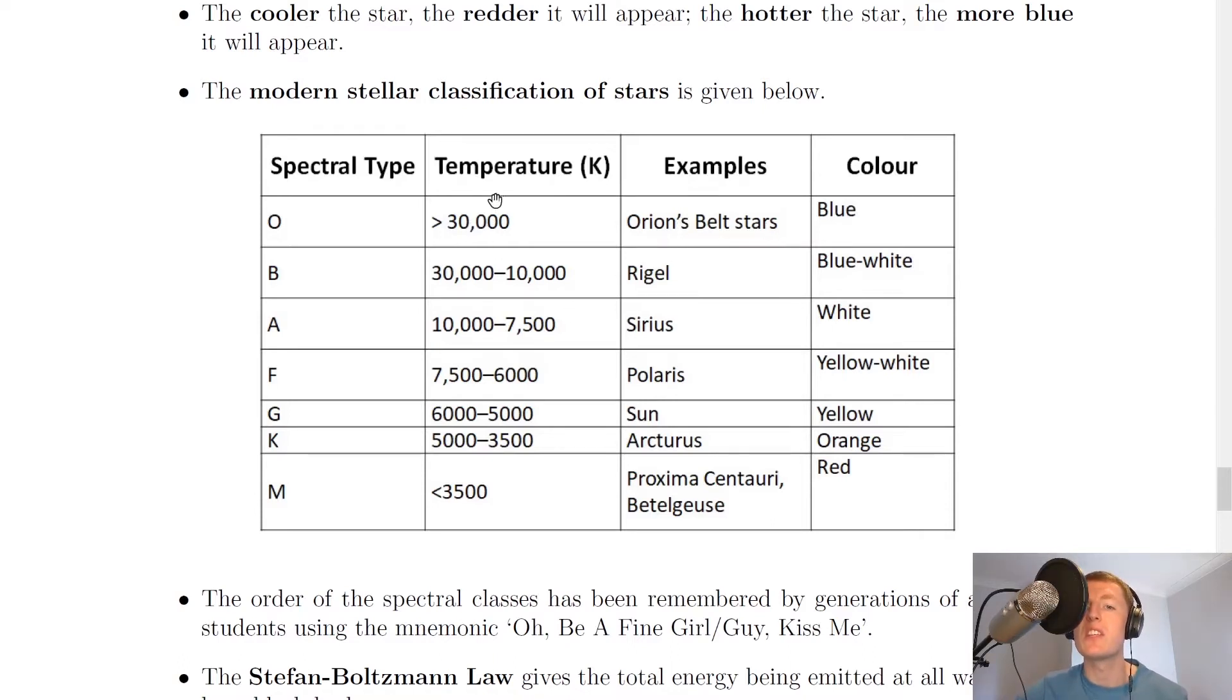You'll notice that as the temperature range gets lower, the color goes from blue towards red. So we go from blue to blue-white, then to white, then to yellow-white, then to yellow, then orange and red. The example for the yellow one is our sun at a temperature between 5,000 to 6,000 Kelvin because the surface temperature of the sun is around 5,800 Kelvin.